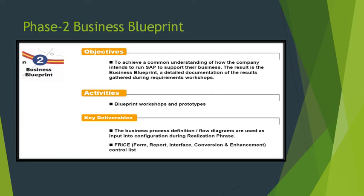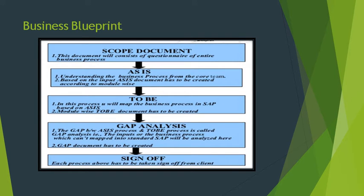Questions that come up include, for example, what information do you capture on a purchase order, and what information is required to complete a purchase order. As we proceed with the business blueprint, we prepare a scope document which consists of questionnaires related to the business processes. We define the as-is — what is the current business scenario — then define the to-be, which is what the client requires. We then do a gap analysis: if standard SAP is not providing something, we analyze and propose how to implement it. Finally, we again take sign-off from the client on the business blueprint.